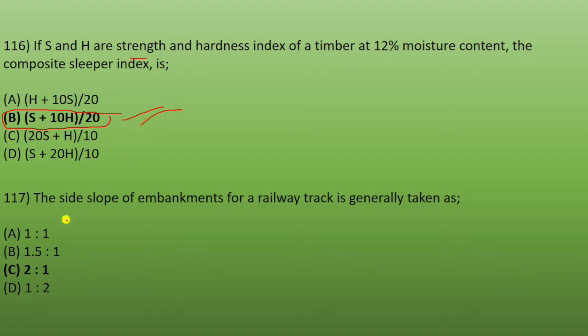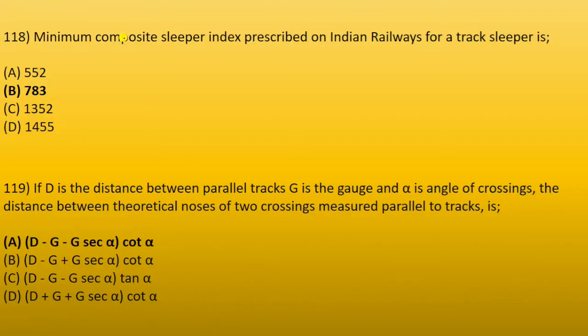Next: the side slope of embankment for railway track is generally taken as 2 is to 1. The slope of railway track embankment is 2:1 — there are two types of side slopes. Next: the minimum composite sleeper index prescribed on Indian Railway for track sleepers is 7, 8, or 3. In MCQs you need to remember these options.